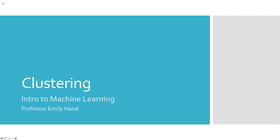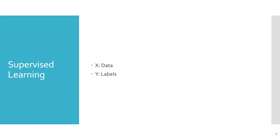Welcome back to Machine Learning. The video today will cover clustering. We've talked about supervised learning so far in Decision Trees and K-Nearest Neighbors. With a supervised learning algorithm, you have access to both the data and the labels — the data is represented by capital X and the labels by capital Y — and you're able to learn a model that predicts labels based on the labeled training data.